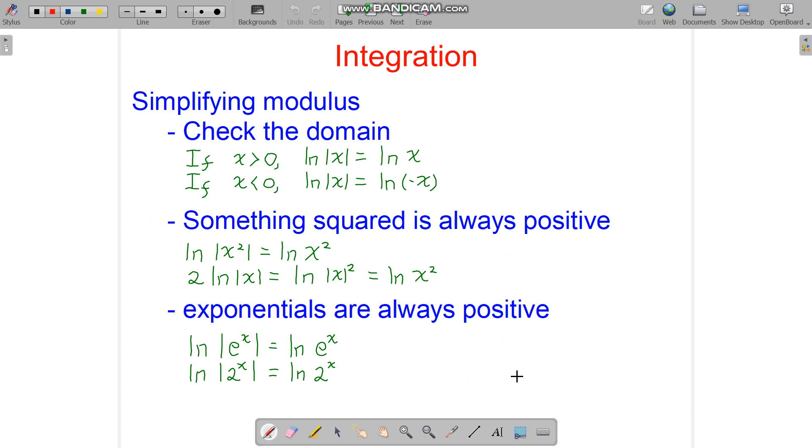And simplifying modulus. Yeah, we can just check the domain. If in the question we have x is bigger than 0 or smaller than 0, then we know which to use here. And remember that something squared is always positive, so we don't need to use the absolute value. And also remember that exponentials are always positive.